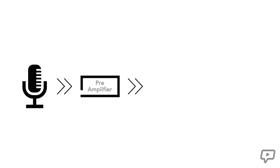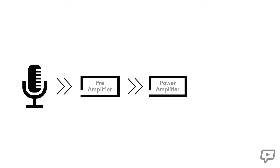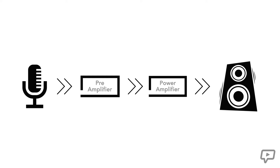After the mixer stages we have the power amplifier. This may be integrated into simpler systems or an external piece in more complex systems. This sends our mixed signals to speakers through an electrical signal which is converted into sound by the speaker components.